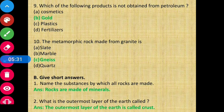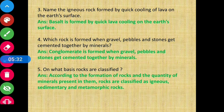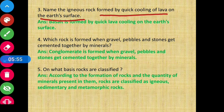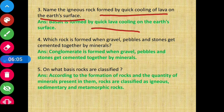Question 3: Name the igneous rock formed by quick cooling of lava on the earth's surface. Igneous rocks are formed when lava comes to the surface, cools and then hardens. The igneous rock formed by very quick cooling of lava on the earth's surface is basalt. Basalt is formed by quick lava cooling on the earth's surface.